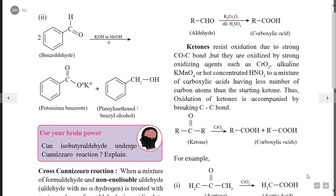For example, benzaldehyde treated with concentrated nitric acid in the presence of concentrated sulfuric acid (nitrating agent) results in the nitro group substituting at the meta position with respect to the aldehyde group, giving meta-nitrobenzaldehyde as the product, with H2O as a side product. These are the oxidation and reduction reactions of aldehydes and ketones.